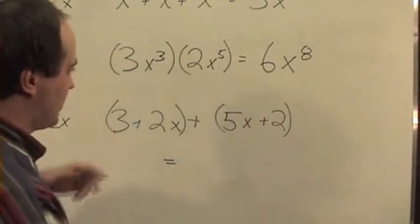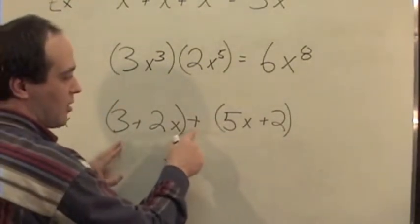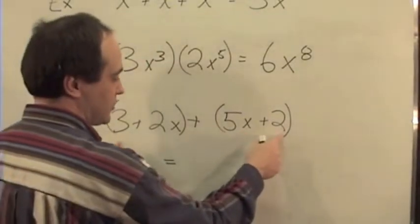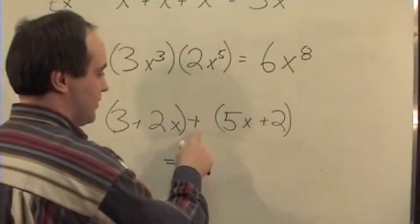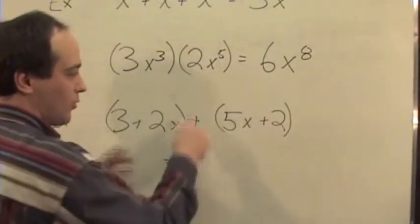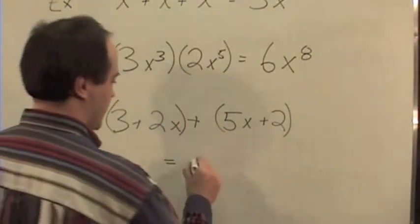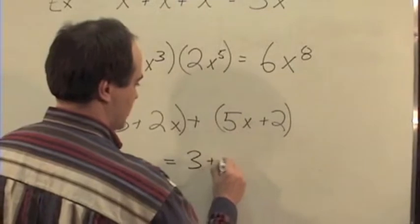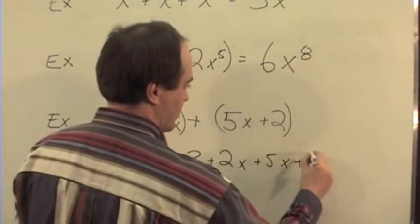Then we have another example that may have 3 plus 2x, all plus 5x plus 2. Now again, since this is all addition, this is added to this, to this, to this, we don't really need these parentheses, it's all associative.